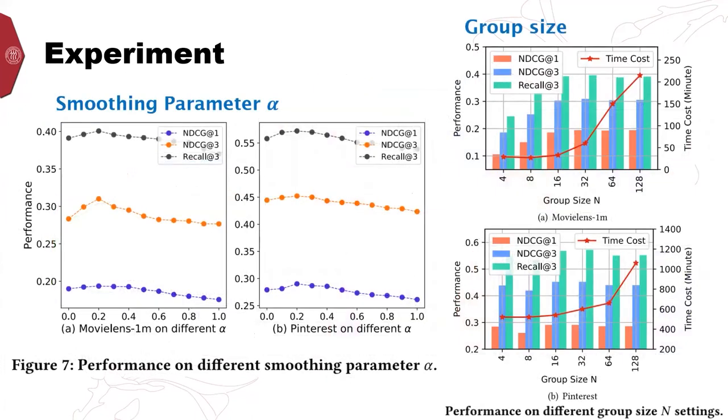We also explore the effects of different parameters on the performance. In this experiment, except for the parameters being tested, all other parameters are set as optimal configuration. In the left figure, we can observe that the performance first increases and then drops with the growth of alpha. And our model achieves best performance at alpha equals to 0.2 setting.